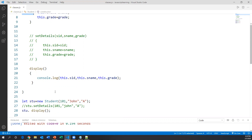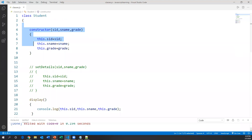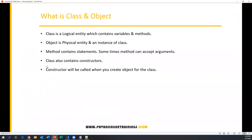A class is a logical entity whereas an object is a physical entity. For one class we can create any number of objects. The class contains methods as well as a constructor. Every object is independent — whenever we invoke the constructor or call methods, they are invoked from their respective objects. That's all about class, object, methods, and constructors in JavaScript. Thanks for watching.